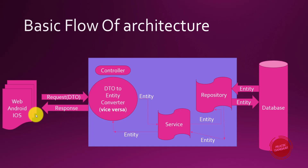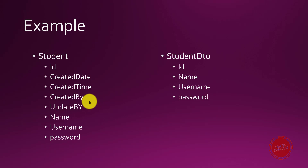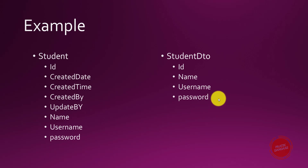This is the example of Student and Student DTO. The Student entity has fields like ID, created date, created time, created by, and updated by. In the DTO I only want to expose certain fields to the real world. I don't want to expose the password — but since the DTO communicates with the network layer, I need to take the password as input from the user, encrypt it, and save it. So I need to put the password field inside the DTO, but while returning the DTO I don't want to expose it.